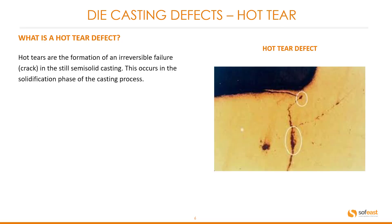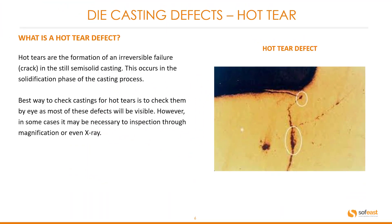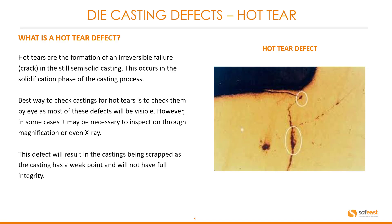Hot tear. What is a hot tear defect? Hot tears are the formation of irreversible failure or a crack in the still semi-solid casting. This occurs in the solidification phase of the casting process. In this image here we can see a hot tear defect — the cracks are clearly obvious but we've encircled them just to make it clear. The best way to check castings for hot tears is to check them by eye as most of these defects will be visible. However, in some cases it may be necessary to inspect through magnification or even x-ray. This defect will result in the castings being scrapped as the casting has a weak point and will not have full integrity.